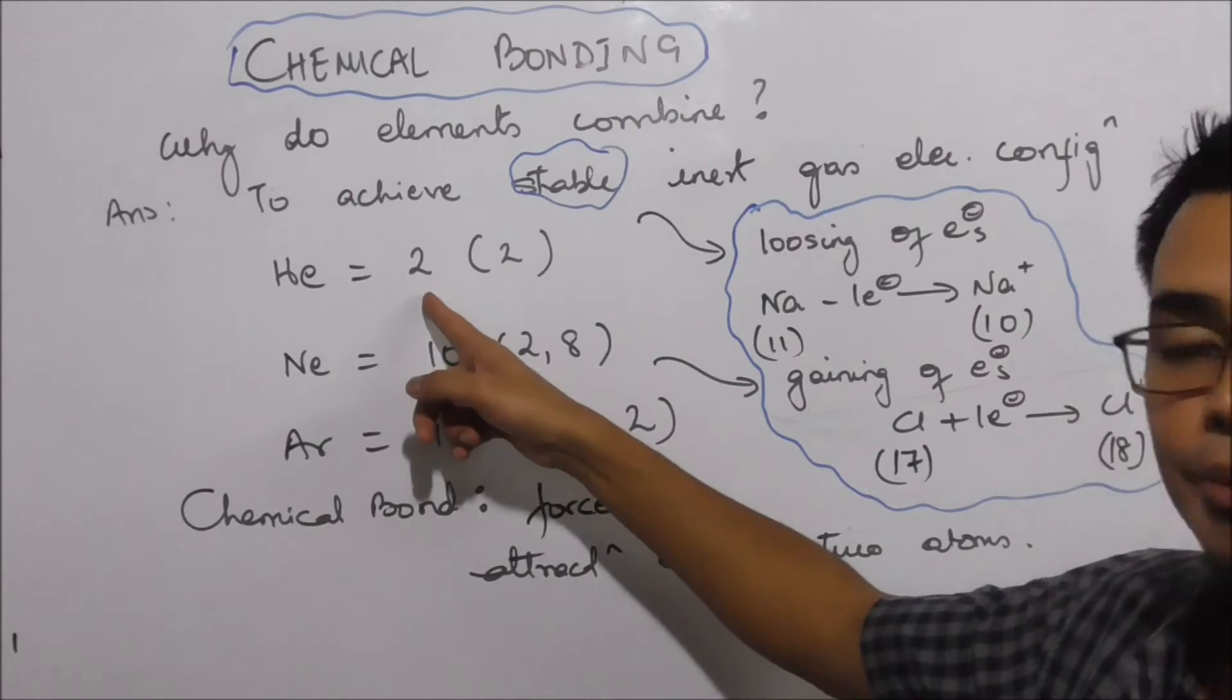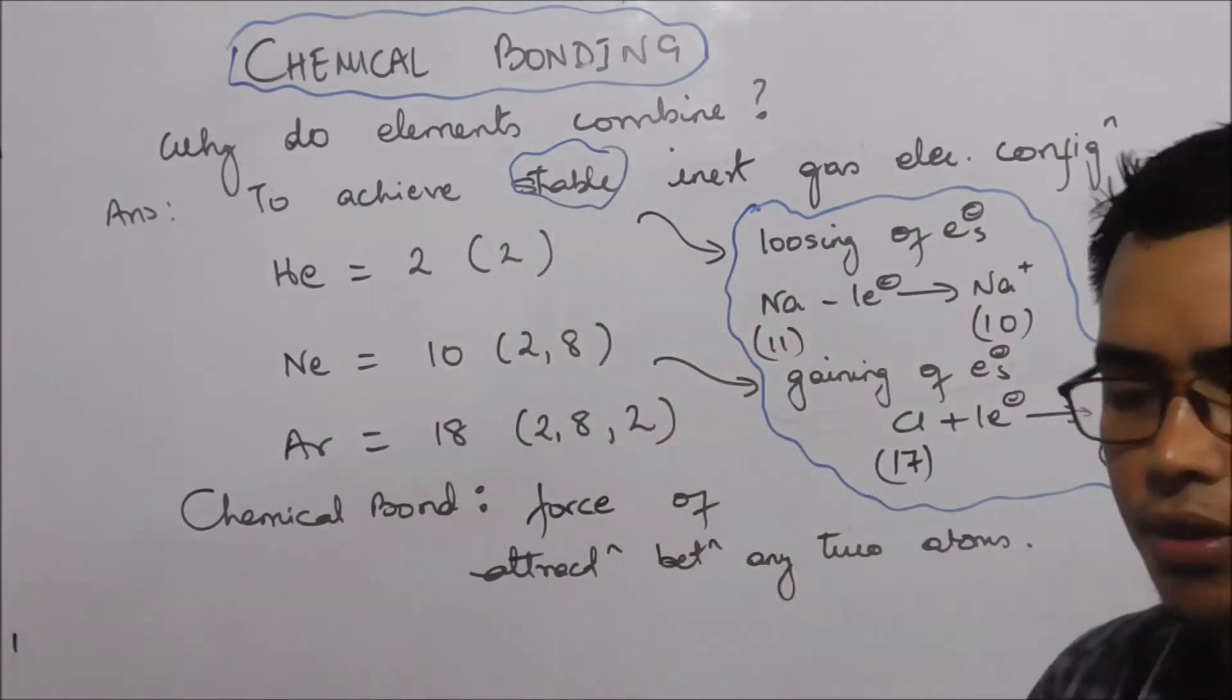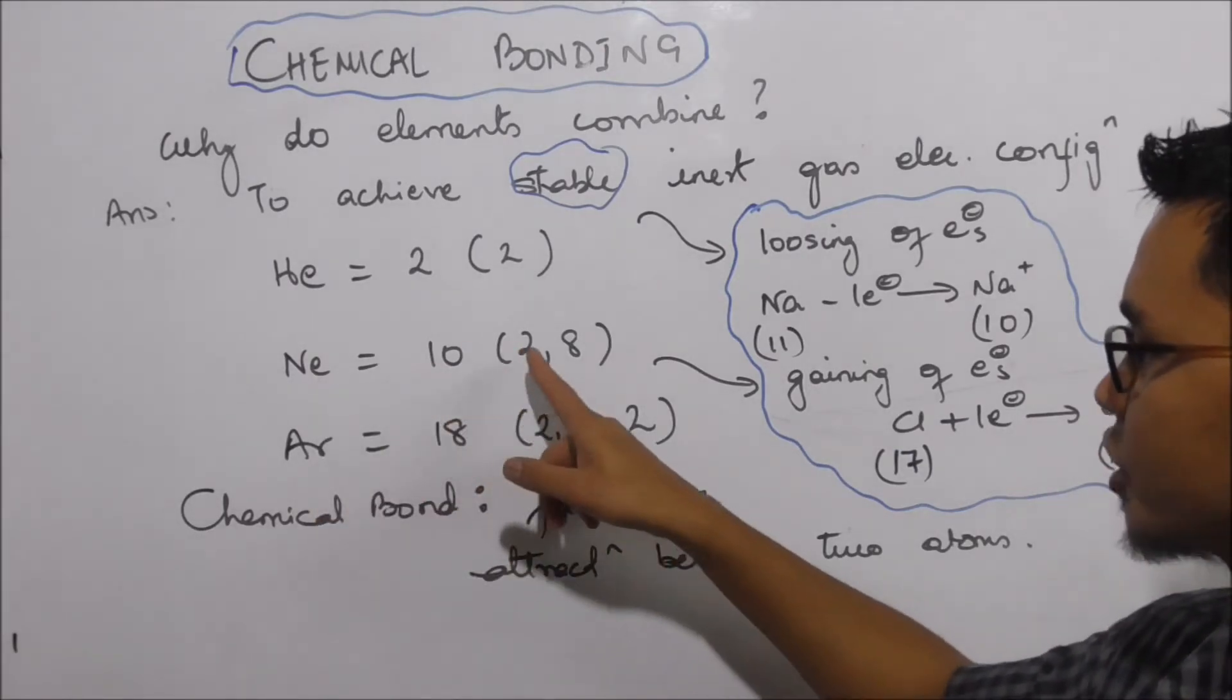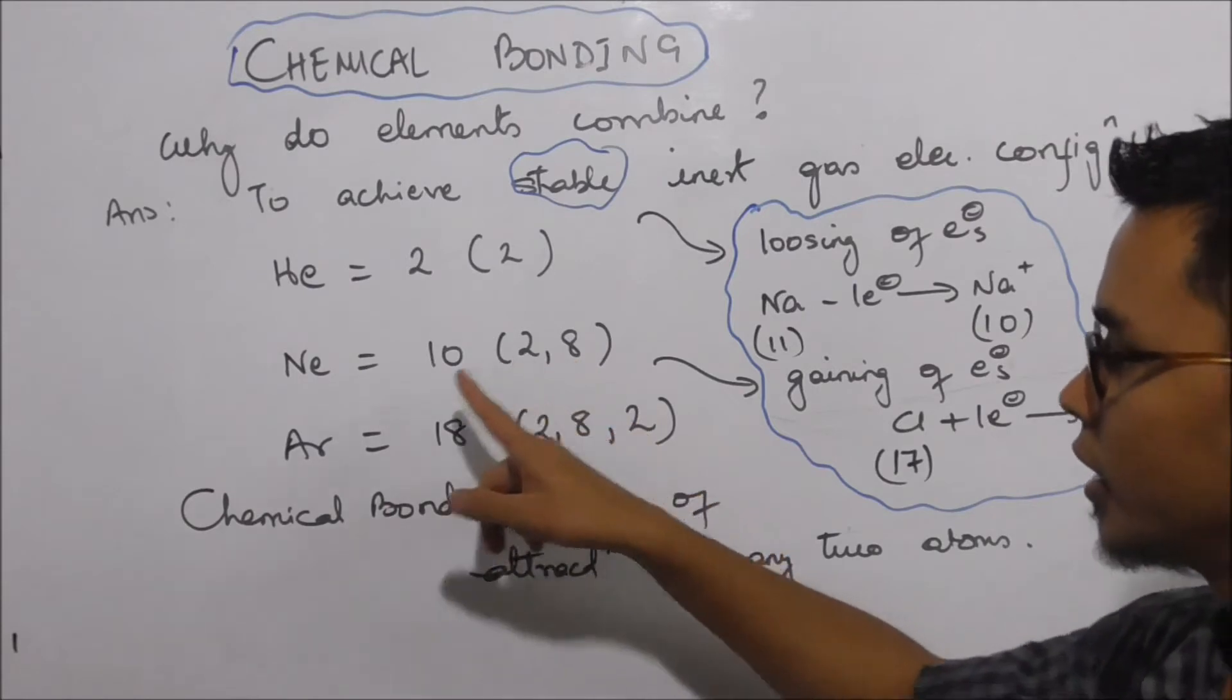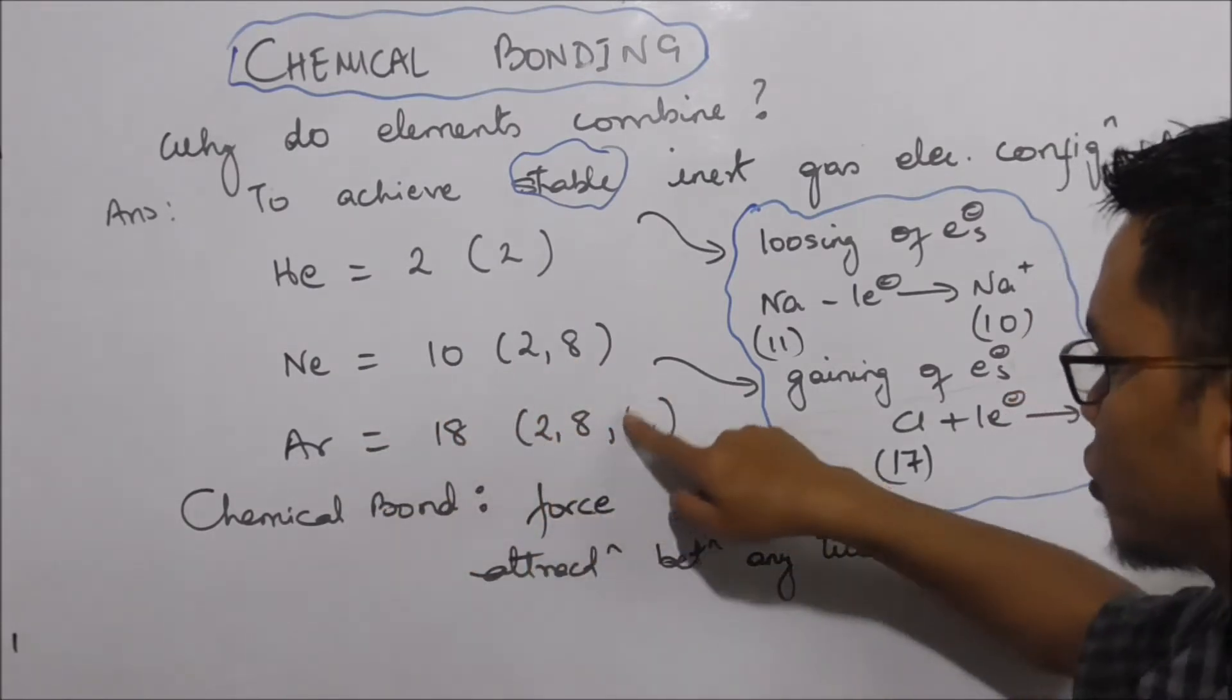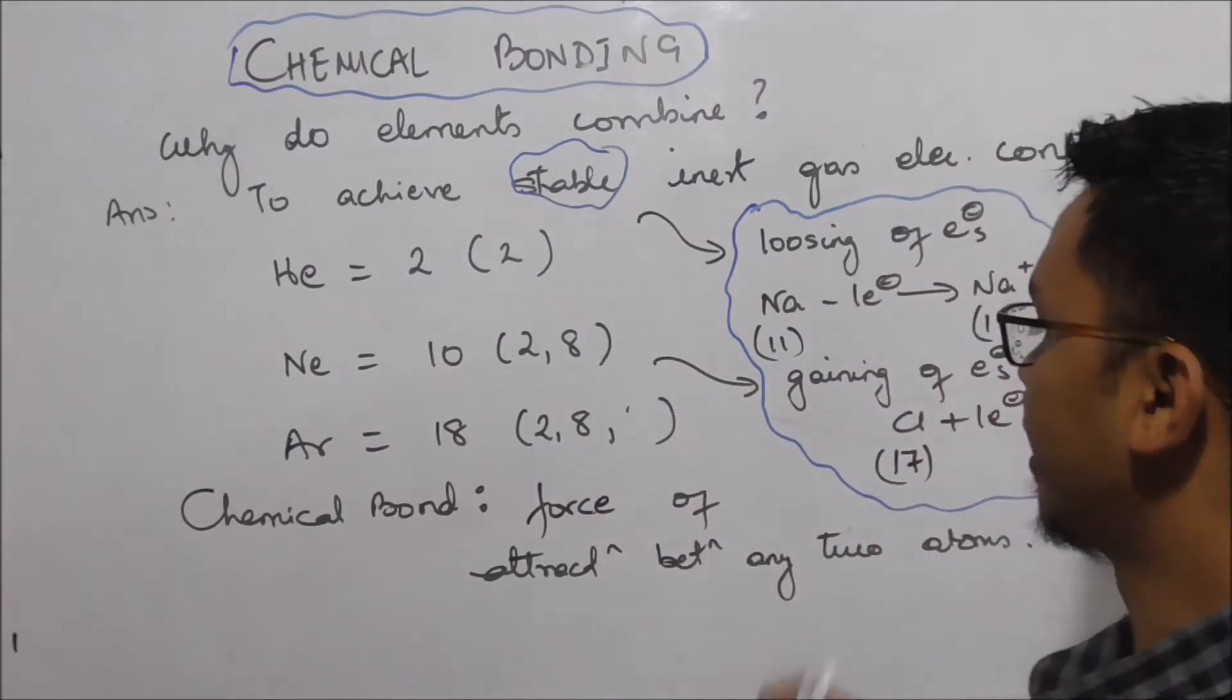Helium atomic number is 2, with 2 electrons in the first shell. Neon atomic number is 10: first shell 2, second shell 8. Argon atomic number is 18: first shell 2, second shell 8, third shell 8.